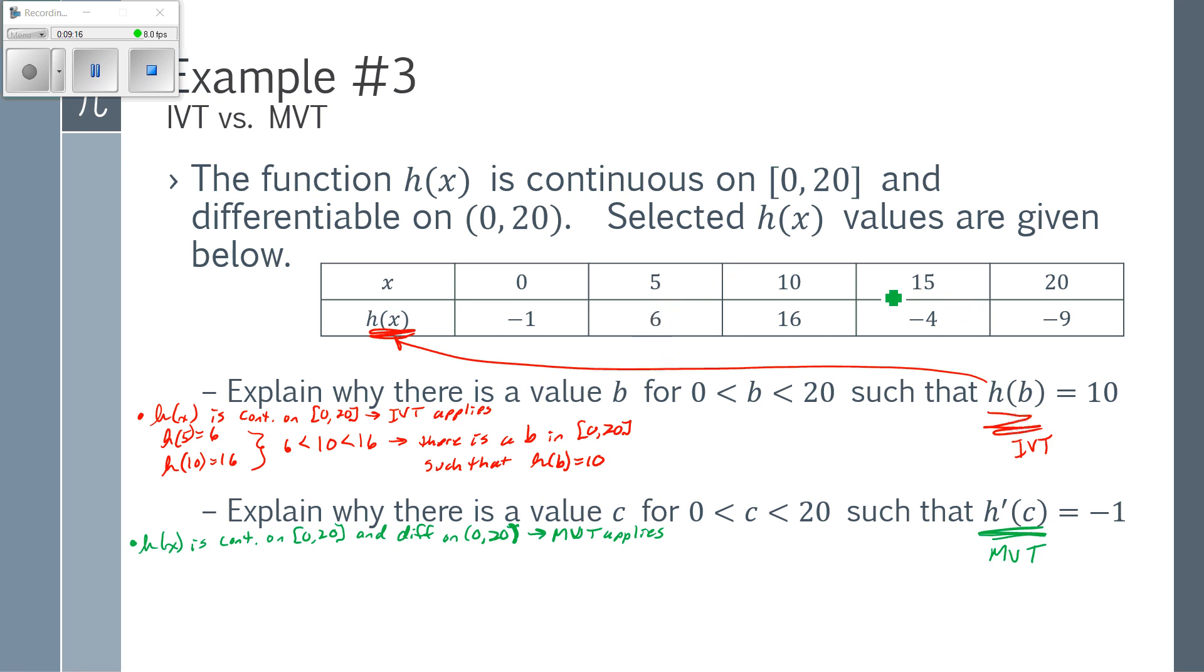so H of 15 minus H of 5 over 15 minus 5 well H of 15 is negative 4 H of 5 is 6 over 15 minus 5 this gives me negative 10 over 10 which is negative 1.